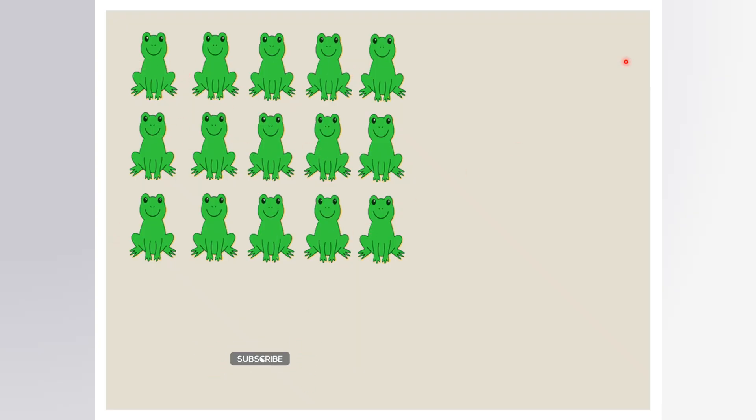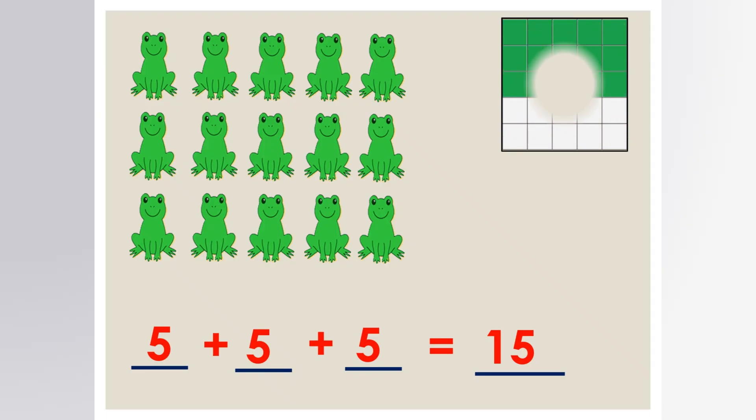One, two, three rows. So it means we're going to add five repeatedly three times. Five plus five plus five. Five plus five is ten. Ten plus five gives us fifteen. Meaning we have three rows of five.